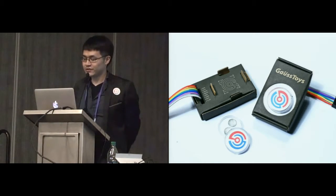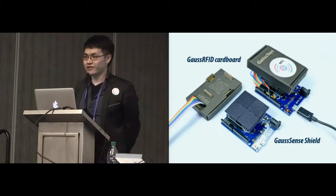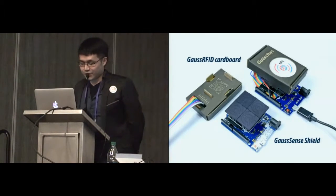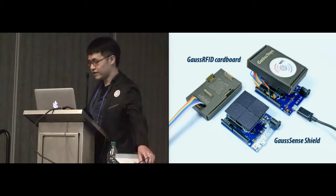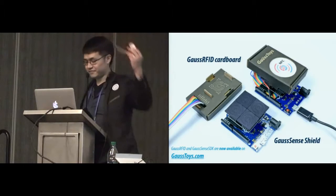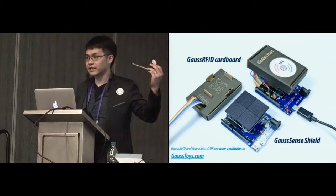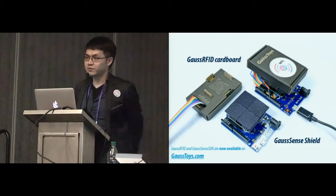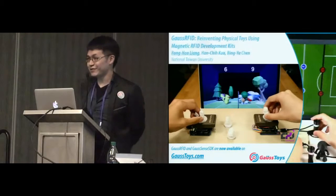We present the new Gauss RFID module, the Gauss RFID Cardboard, and also the Arduino-compatible Gauss Sense Shield. This is the most affordable version. And I have one in my hand, so later you can come over to take a look. And most important, it is available from today. And you can order it from the website and have it in just a few days after you're back home.